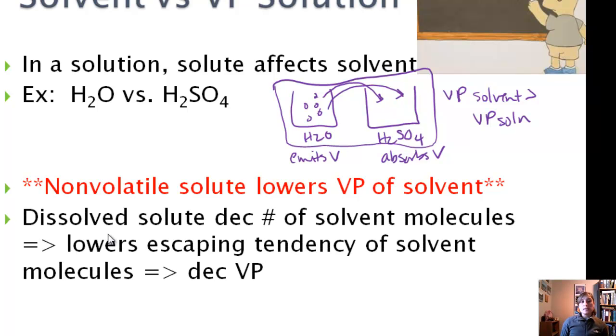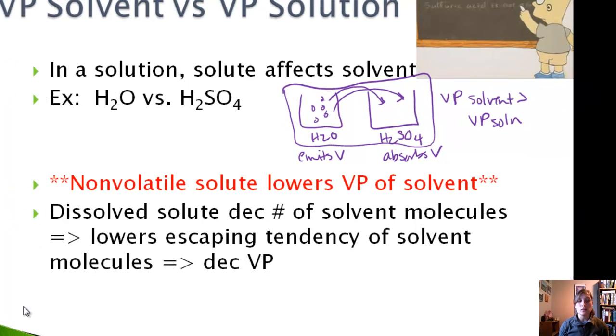And the reason for this is because the dissolved solute, so in our case H2SO4, or if you're doing like salt and water, the salt, it decreases the number of solvent molecules, which then lowers the escaping tendency of the solute molecule, which then decreases the vapor pressure. So instead of just solvent molecules, you've got solvent and solute mixed together.